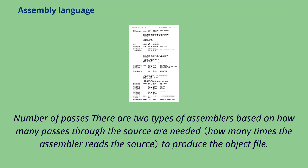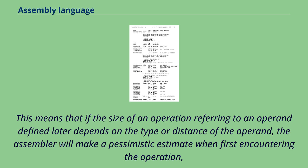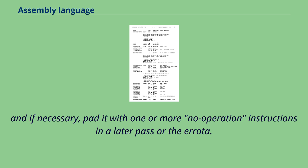There are two types of assemblers based on how many passes through the source are needed to produce the object file. In both cases, the assembler must be able to determine the size of each instruction on the initial passes in order to calculate the addresses of subsequent symbols. This means that if the size of an operation referring to an operand defined later depends on the type or distance of the operand, the assembler will make a pessimistic estimate when first encountering the operation.